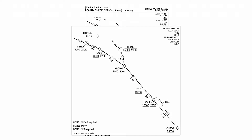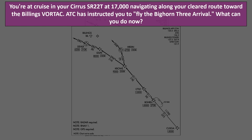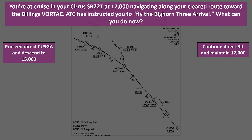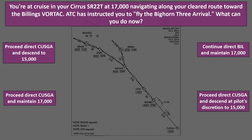For the next question, you're at cruise in your Cirrus SR-22T at 17,000 feet, navigating along your cleared route towards the Billings Vortac. ATC has instructed you to fly the Bighorn 3 arrival. What can you do now? Proceed direct Kuzga and descend to 15,000? Continue direct Billings and maintain 17,000? Proceed direct Kuzga and maintain 17,000? Or proceed direct Kuzga and descend at pilot's discretion to 15,000?